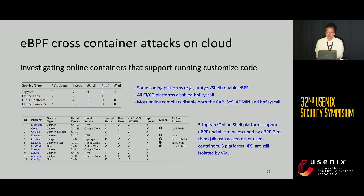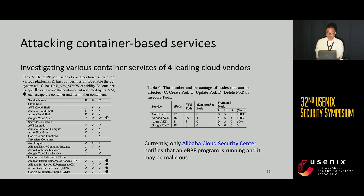We investigated online containers that support running customized code, such as Jupyter, online coding labs, CI/CD platforms, and online competitions. Results show that only online coding services enable eBPF permissions. Five Jupyter or online shared platforms support eBPF, and all of them can be escaped; two of them can access other users' processes. We also investigated all container services of four leading cloud vendors. All Kubernetes services allow creation of containers with eBPF permissions and can be escaped. Three platforms' default Kubernetes clusters have overprivileged pods that may be exploited by eBPF attackers to control the cluster. Under this condition, only Alibaba Cloud Security Center noticed this attack, while other cloud security centers gave no warning.